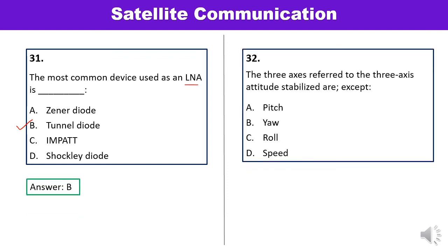Question 32: Answer is D. The three axes referred to in three-axis attitude stabilization are pitch, roll, and yaw. Answer D is correct.